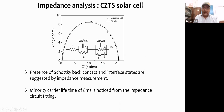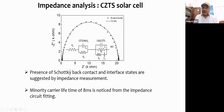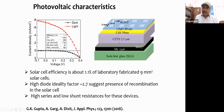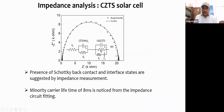From the impedance data, we can also extract the average carrier lifetime: the frequency at which the imaginary part is maximum gives τ = 1/(2πf_max). In this device the carrier lifetime is very long (~8 ms), indicating that carriers generated are recombining at interfaces rather than being collected — contributing to the low efficiency of around 1% in this case.